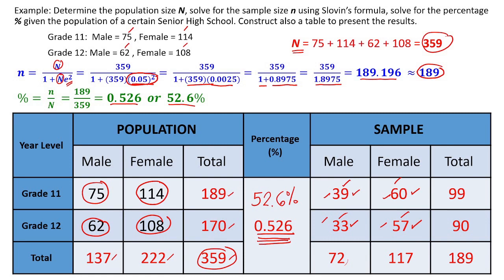This is how we do the sample size computation. So I need to give this questionnaire to 39 male Grade 11 students, 60 female Grade 11 students, 33 male Grade 12 students, and 57 female Grade 12 students. This is how you compute the sample size.